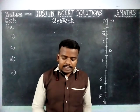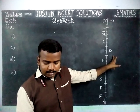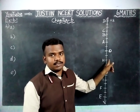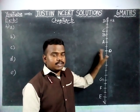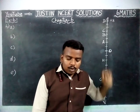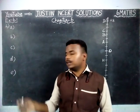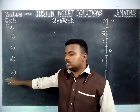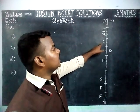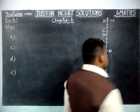The question is: the adjacent figure is a vertical line representing integers. Observe it and locate the following points. We are going to find the 5 questions. Before that, first we will observe what is that vertical line.